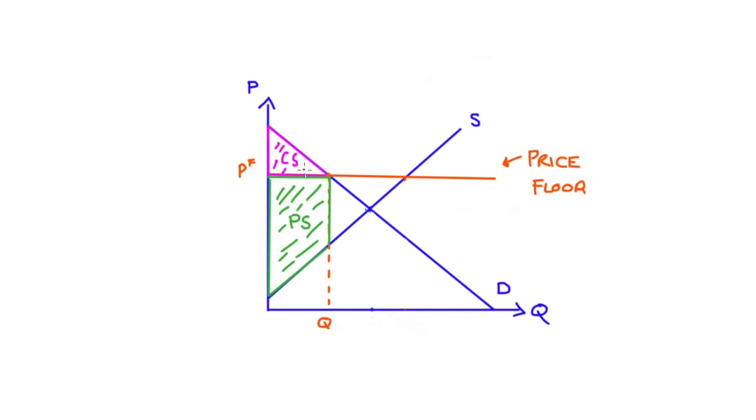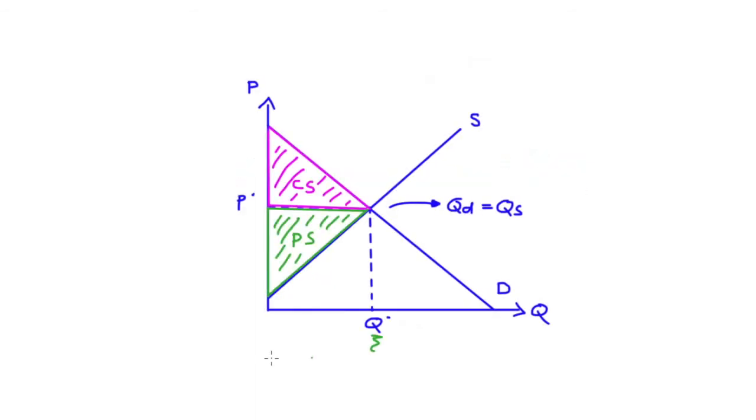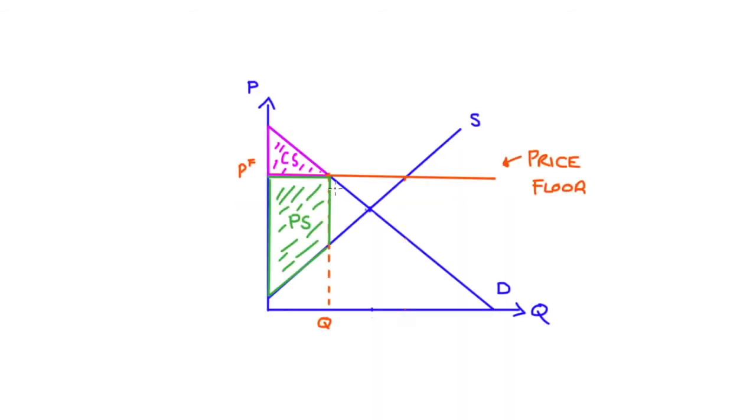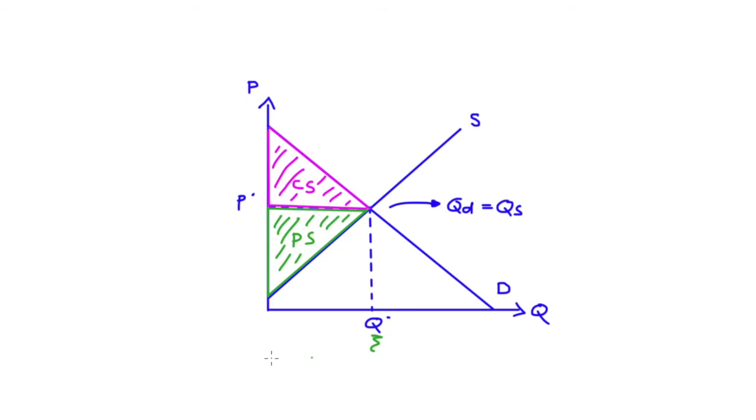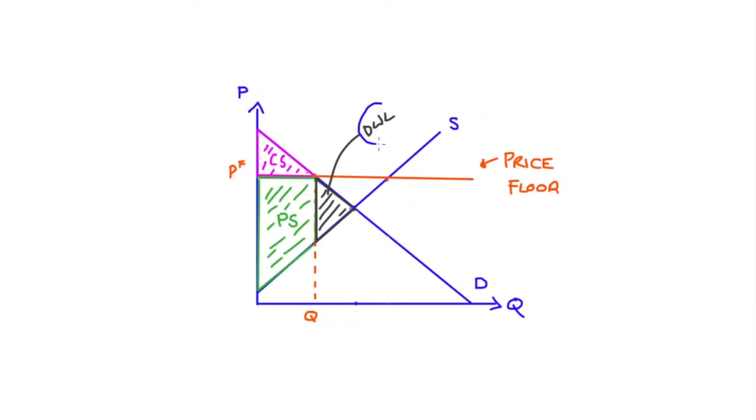And so now we can compare the two outcomes in terms of welfare. Here I have just a flashback to what it was before and now, and we can now compare the differences. Now, one big difference is that there is an area that is now blank and I'm going to color that in black and I'm going to call that deadweight loss. Now that's our loss of surplus. That area used to be either consumer surplus or producer surplus. So this loss of surplus, this area that is no longer surplus, that's going to be our deadweight loss.